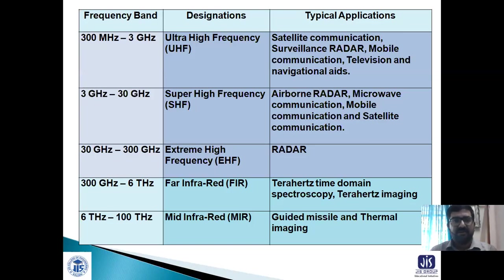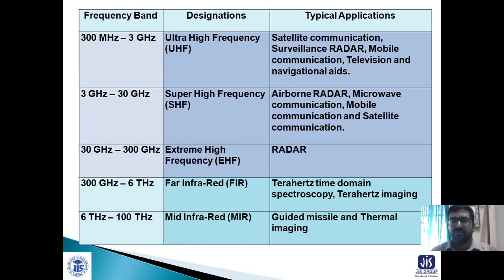From 3 GHz to 30 GHz, super high frequency covers airborne radar, microwave communication, mobile communication, and satellite communication. From 30 GHz to 300 GHz, extremely high frequency is used for radar. Radar is an ubiquitous technology with applications from automobiles and speed measurement to aircraft navigation, ship navigation, and missiles.